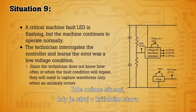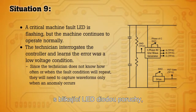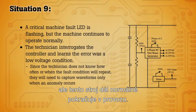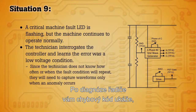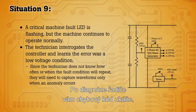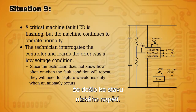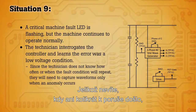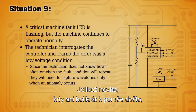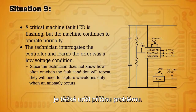Here we have a scenario where you have a critical machine with a fault LED flashing, but the machine is continuing to operate normally. Diagnosing the controller, you find the error codes indicate there has been a low voltage condition. Since you don't know when the fault occurred or how often it's happened, it's difficult to diagnose the root of the problem.